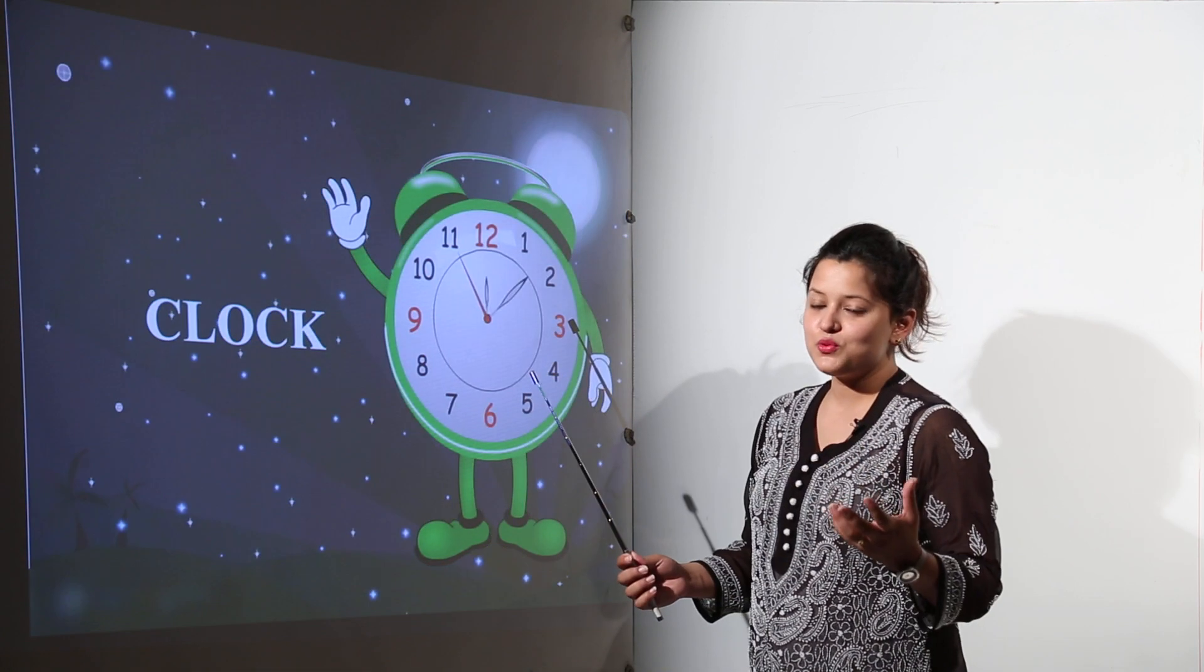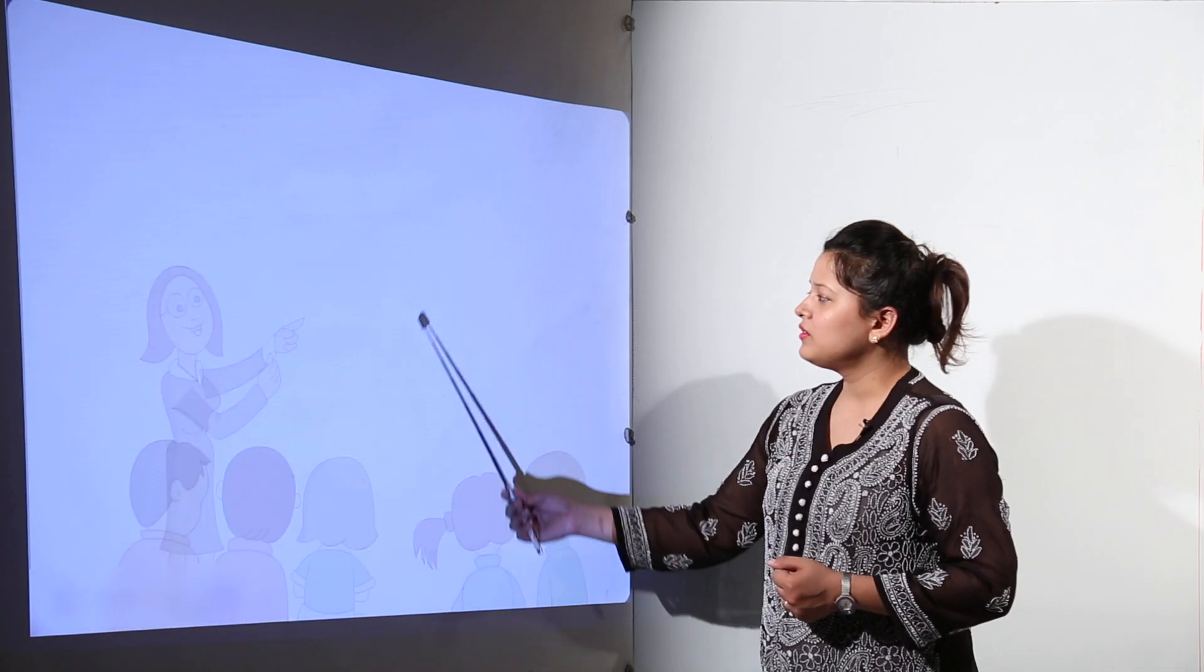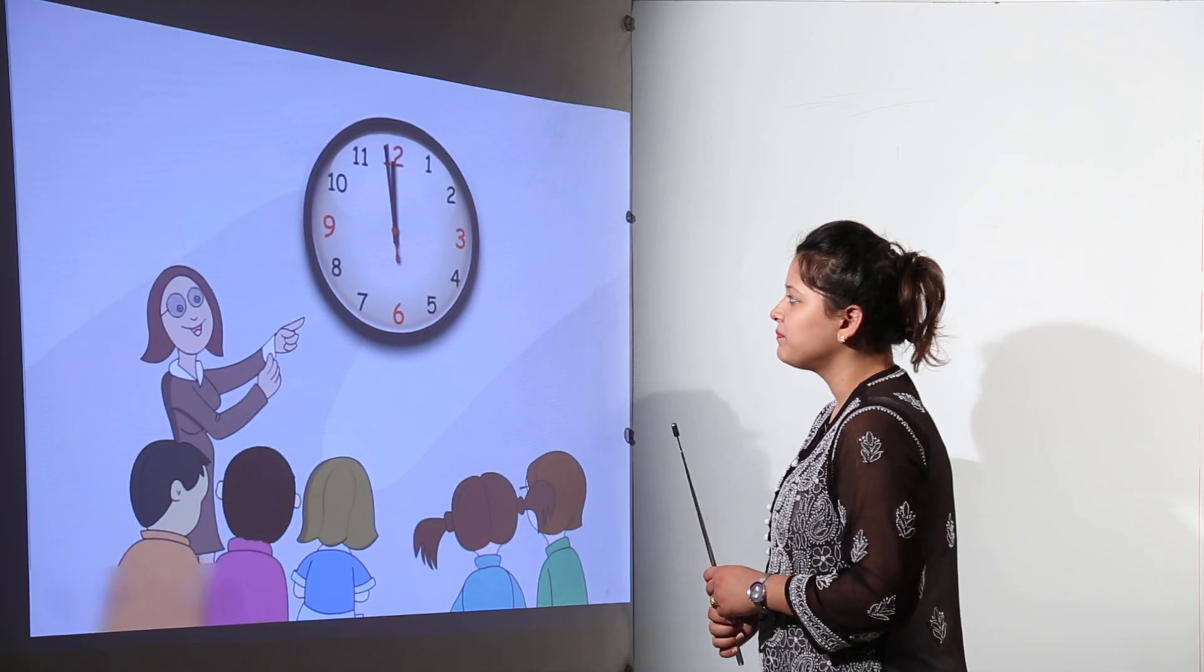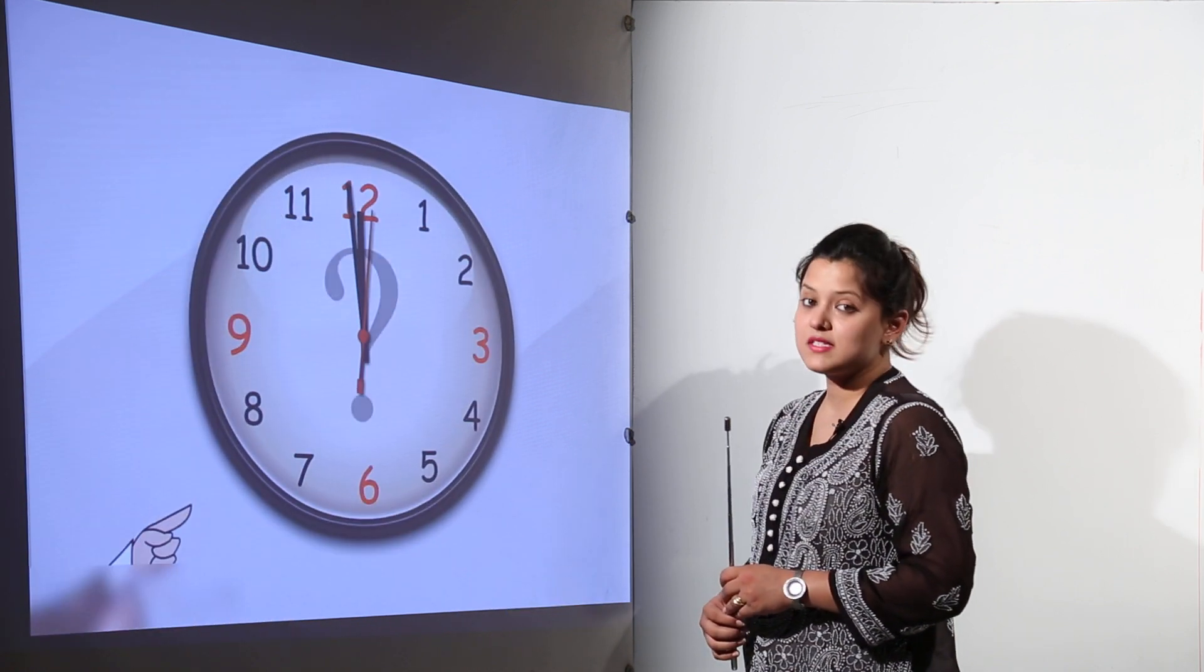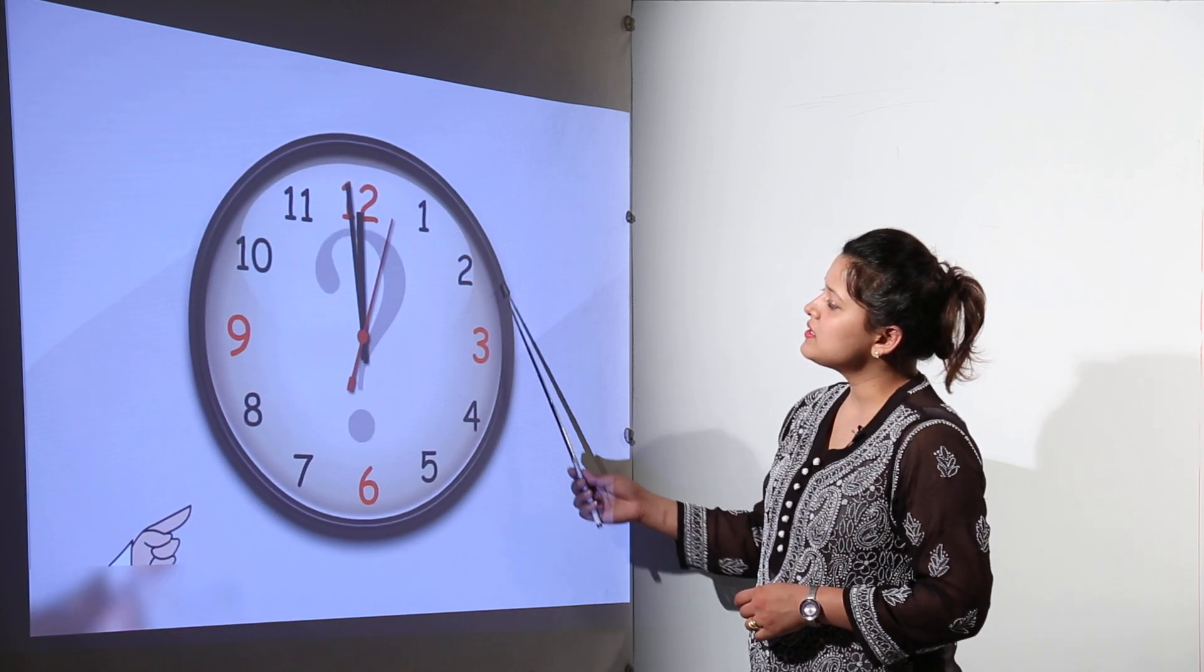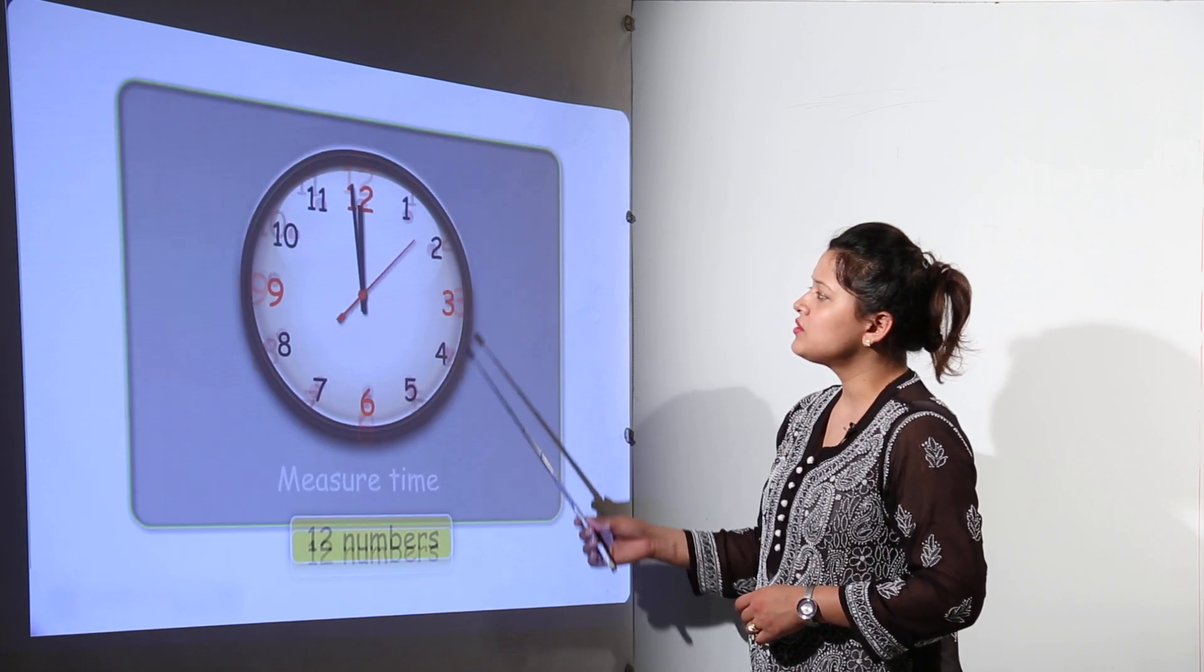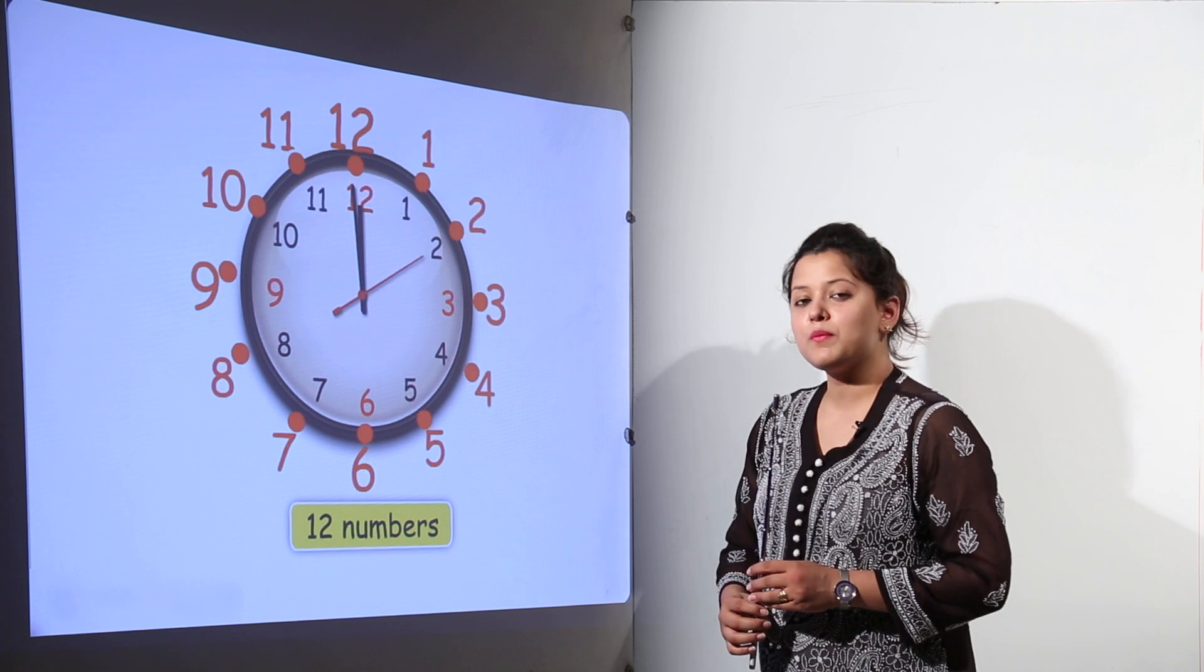Time is generally learned with the help of a clock. You know a clock? A clock is basically helping us to read the time. A clock always tells us the time. As you can see over here, this clock is having 12 numbers and the 12 numbers are starting from 1 up to 12.